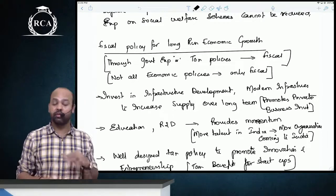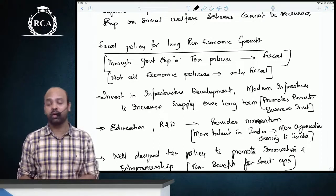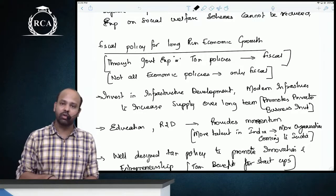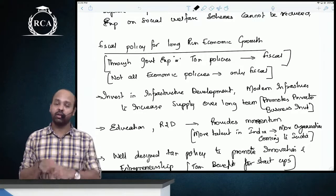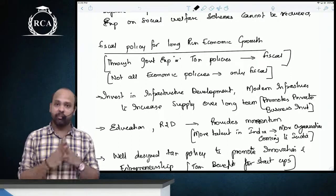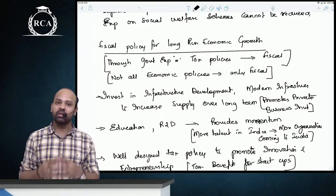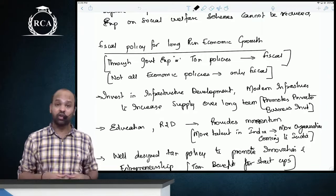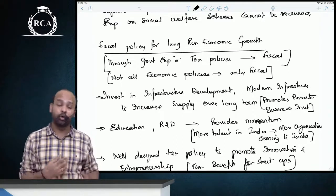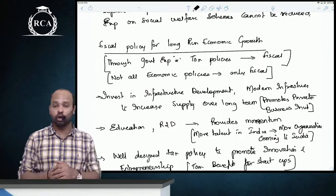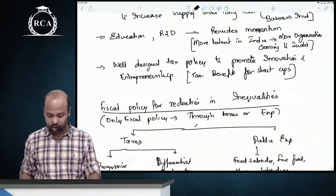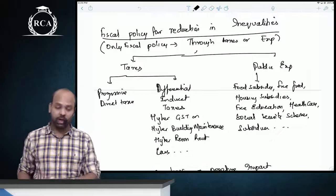For fiscal policy aimed at long-run economic growth, the government should invest in modern infrastructure, education, and research and development. The government should also design a well-structured tax policy that promotes innovation and entrepreneurship. The objective is to increase the supply side of the economy over a longer period.